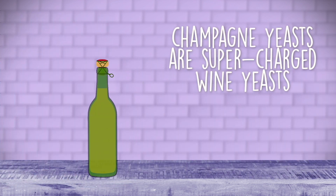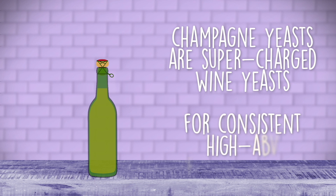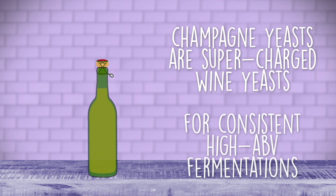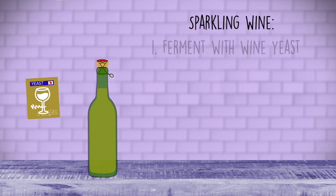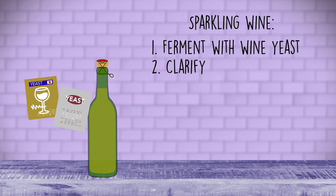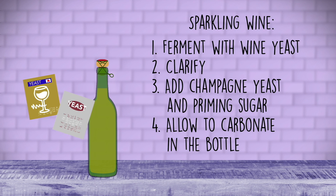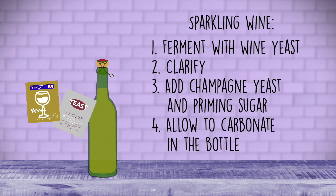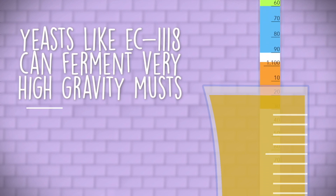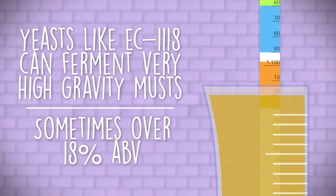Champagne yeasts are typically supercharged wine yeasts. Often they are killers, intended for consistent, high-ABV fermentation. Sparkling wines are usually fermented with a different strain of wine yeast; then champagne yeasts are introduced during the bottling process. This affords consistent and relatively predictable carbonation of the sparkling wine after a yeast more suitable for flavor production is used during the outset. Essentially, champagne yeasts are intended to garner good bubbles, not necessarily good flavors. However, many homebrewers have found them useful for consistent fermentation at very high gravities, meaning ABV of 18% or higher is possible.